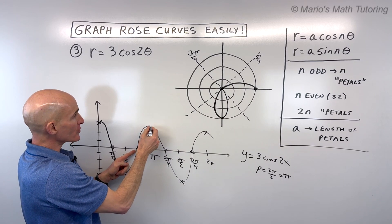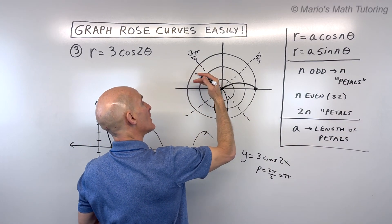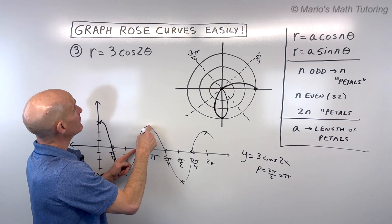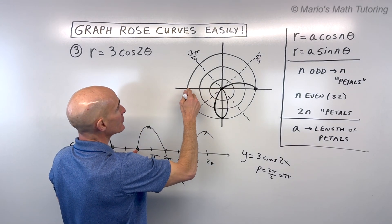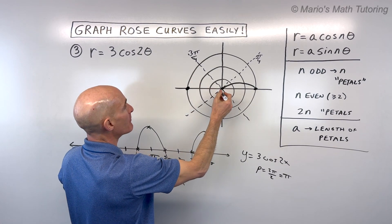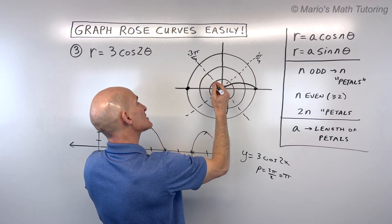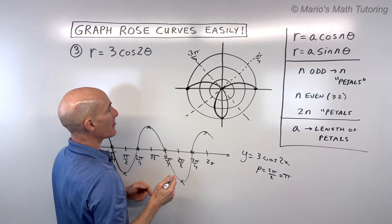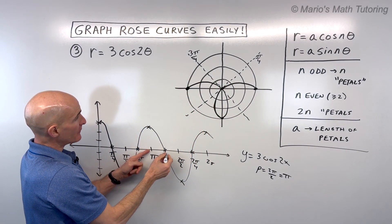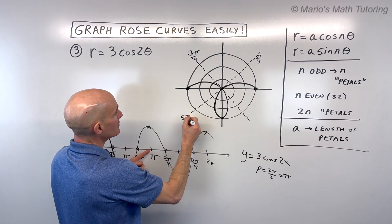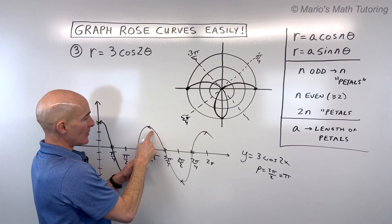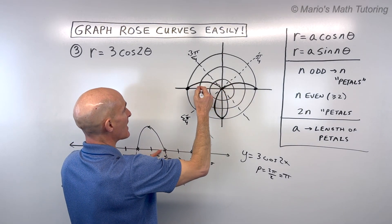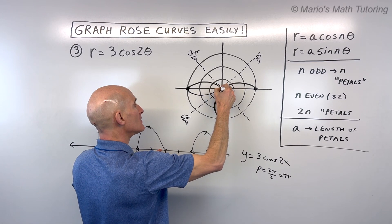From 3π/4 to π, the r value goes positive, reaching a maximum of 3 at 180 degrees. So you're spiraling out — the value is getting longer as you're turning. Then from π to 5π/4, the r value is getting smaller back toward 0 — reeling it back in. At 5π/4 it's back to 0.